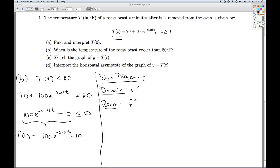So I set f of t equal to 0. And so I've got 100 e to the minus 0.01 t minus 10 equals 0. I add 10 to both sides.